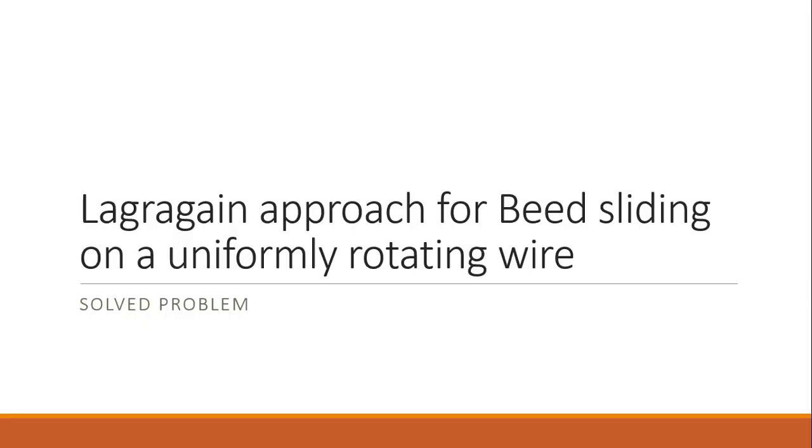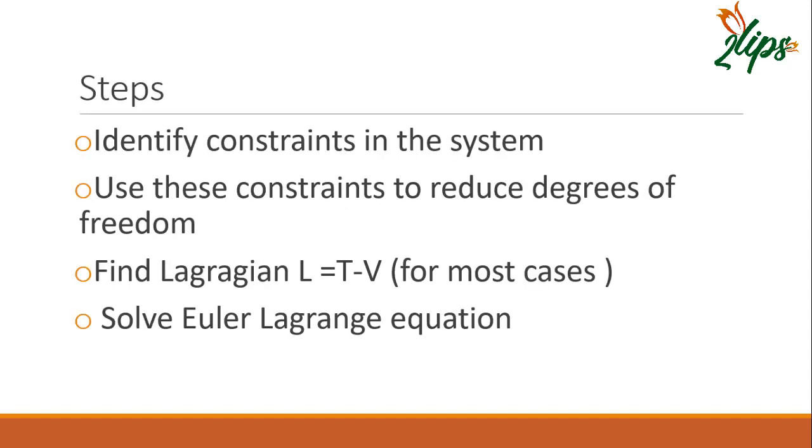This is another solved problem using the Lagrangian approach for a bead sliding on a uniformly rotating wire. The same steps we've already discussed: first, identify constraints in the system, then use these constraints to reduce the degrees of freedom, find the Lagrangian function L, and solve the Euler-Lagrange equation.